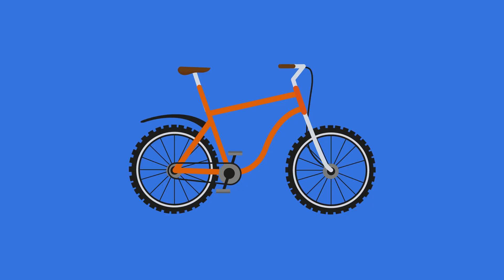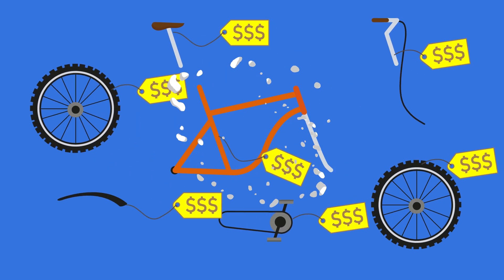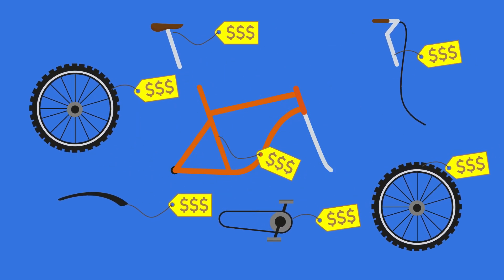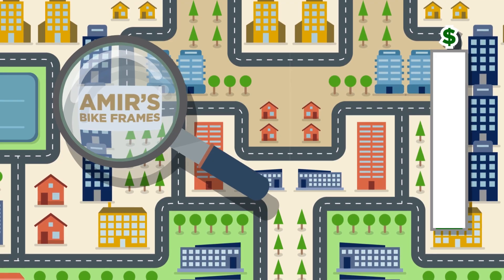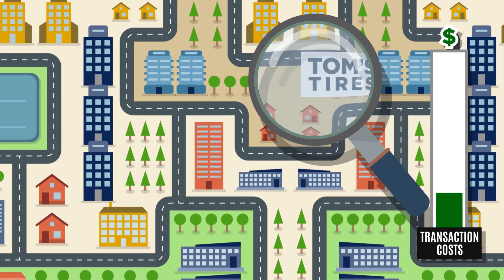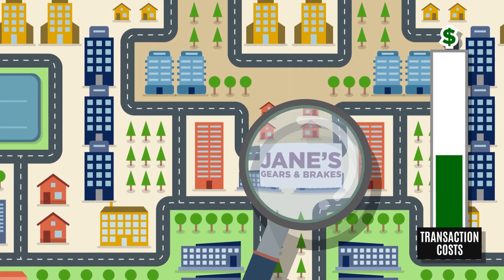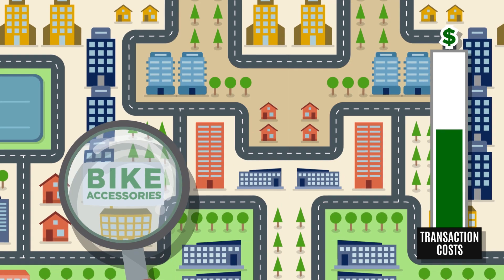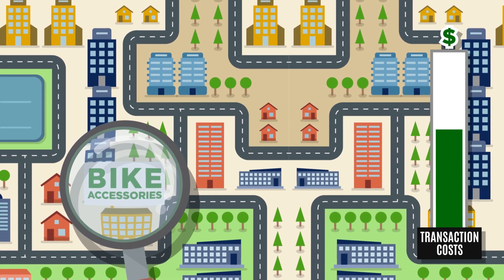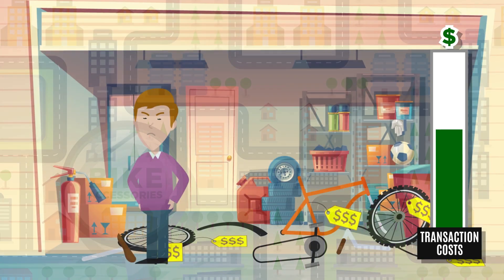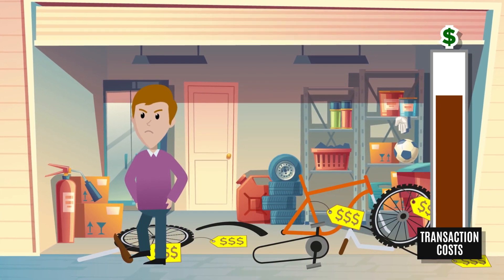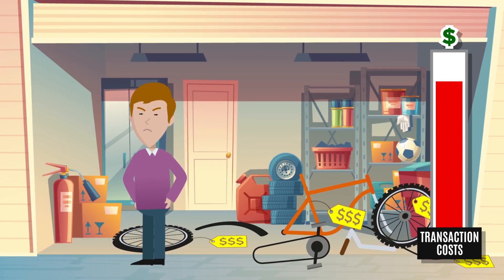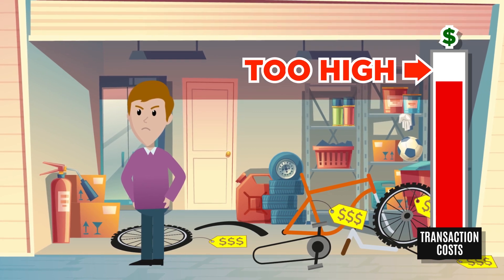Or imagine if bikes were only allowed to be sold in separate parts. You have to buy the frame from one store, the tires from another, the gears and brakes from another, and the accessories from yet another. Simply put, the transaction costs involved in buying a bike would be too high.